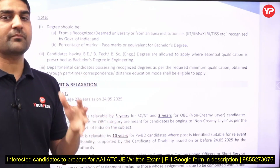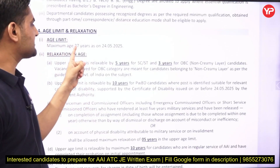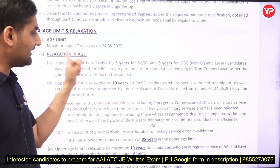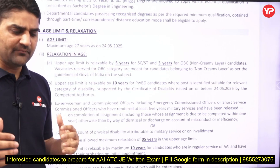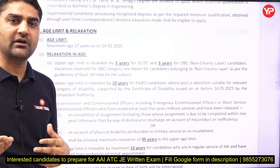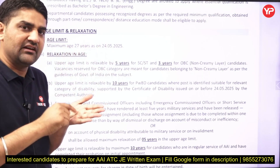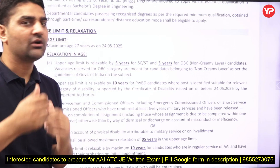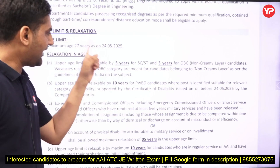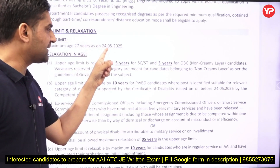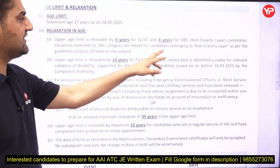The maximum age limit for General category is 27 years, counted from 24th of May 2025. If your age on that date is 27 years and one day, you will not be eligible — not at all. If one extra day is not acceptable, then neither is one year extra. They will exactly count your age from 24th of May 2025.